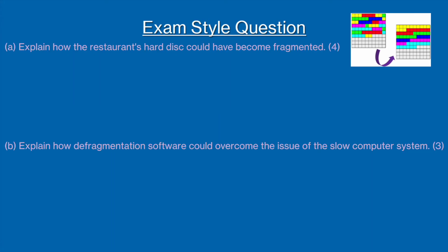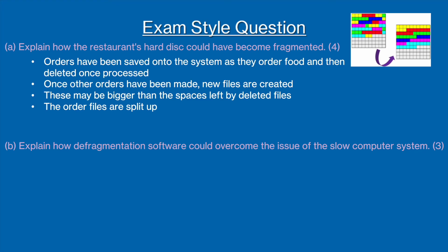For part A, we have to explain how the restaurant's disk could have become fragmented. As it is a four-mark question, we want to try and come up with four different points to explain this. We know that defragmentation deals with two main concepts — files and spaces. As the hard disk is in a restaurant, we must think of the sort of files and data that would be stored — for example, customer orders. When a customer orders food, their orders would be saved on the hard disk. Once the orders have been processed, they are likely to be deleted, creating spaces on the hard disk.